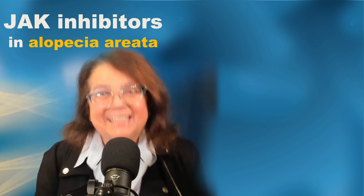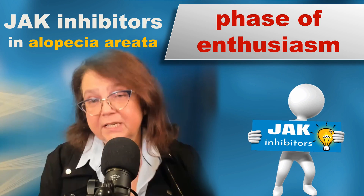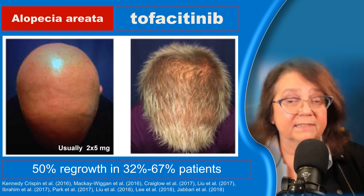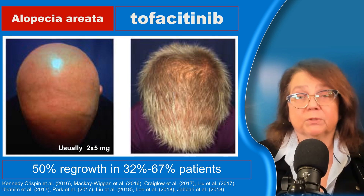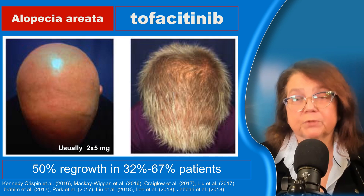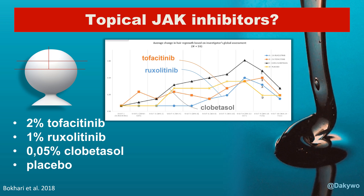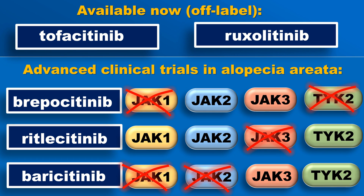Regarding JAK inhibitors in alopecia areata, it started a few years ago with a very enthusiastic phase when we observed that patients who received JAK inhibitors had hair regrowth. One of the first patients in whom this was observed was a 25-year-old man treated for psoriasis with tofacitinib, and he had full hair regrowth. More studies followed showing efficacy of tofacitinib and ruxolitinib. There was also the idea — still valid — to use JAK inhibitors in topical form, especially in children with alopecia areata. These were off-label treatments, but now advanced clinical trials show that at least three JAK inhibitors may be approved for alopecia areata.